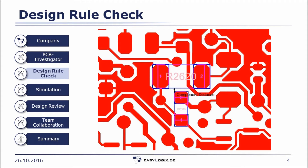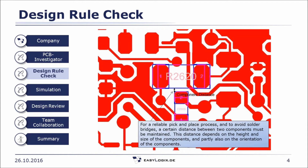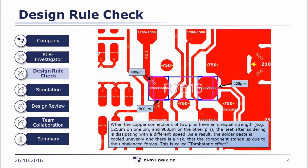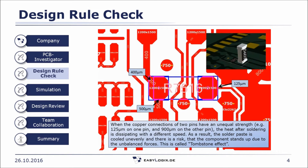For achieving a perfect solder joint and placement, PCB Investigator also investigates the assembly information in the dataset. For a reliable pick and place process and to avoid solder bridges, a minimum distance between two components must be maintained, which depends on the height and size of the component. Another issue can happen during soldering, well known as the tombstone effect. When the copper connection of the two pads of a small component differs significantly, there is a risk that the component stands up during soldering due to an imbalance in cooling down of the paste and the related forces. PCB Investigator reports those components with a few clicks.